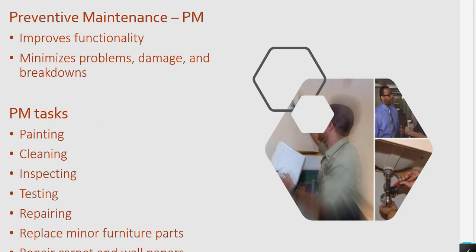What do you mean by Preventive Maintenance? It is to improve the functionality of each equipment and each component available in the guest room. It minimizes problems and damages, and avoids breakdowns while the guest is in-house. The Preventive Maintenance tasks are mainly: painting, cleaning, inspecting, testing, repairing, replacing minor furniture parts, and replacing carpet and wallpapers.